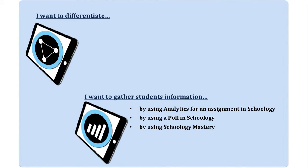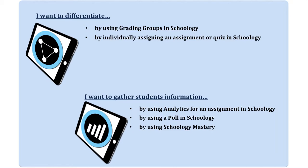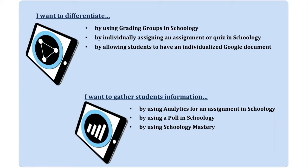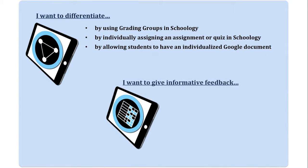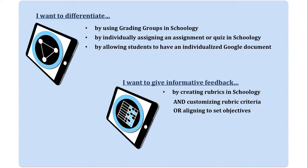If teachers want to differentiate for their students, they can do this by creating grading groups in Schoology, by individually assigning an assignment or quiz to a specific student or group of students in Schoology, or by allowing students to have an individualized Google document built especially for them. If you want to give informative feedback to students, you can do this by creating a rubric, customizing that rubric, or aligning it to set objectives and standards.